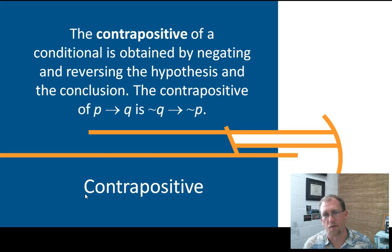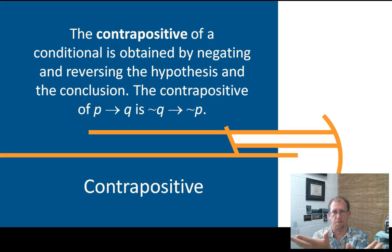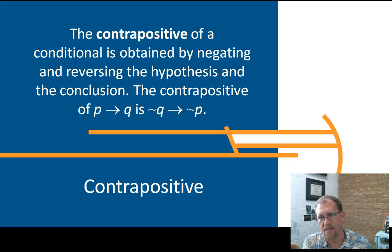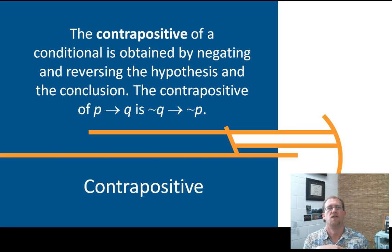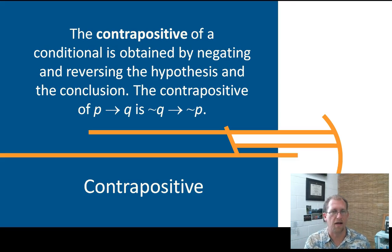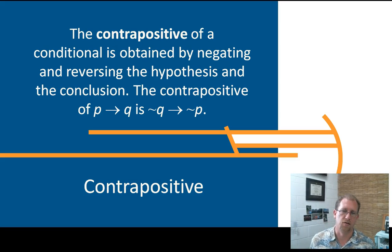A contrapositive is the other way — that's where you have flipped the order and inverted both parts. Contrapositive is negating and reversing the hypothesis and the conclusion. So instead of if P then Q, now we say if not Q, then not P. So: if I am not wearing a windbreaker, then it is not raining. You've switched the order and negated both statements — that's a contrapositive.